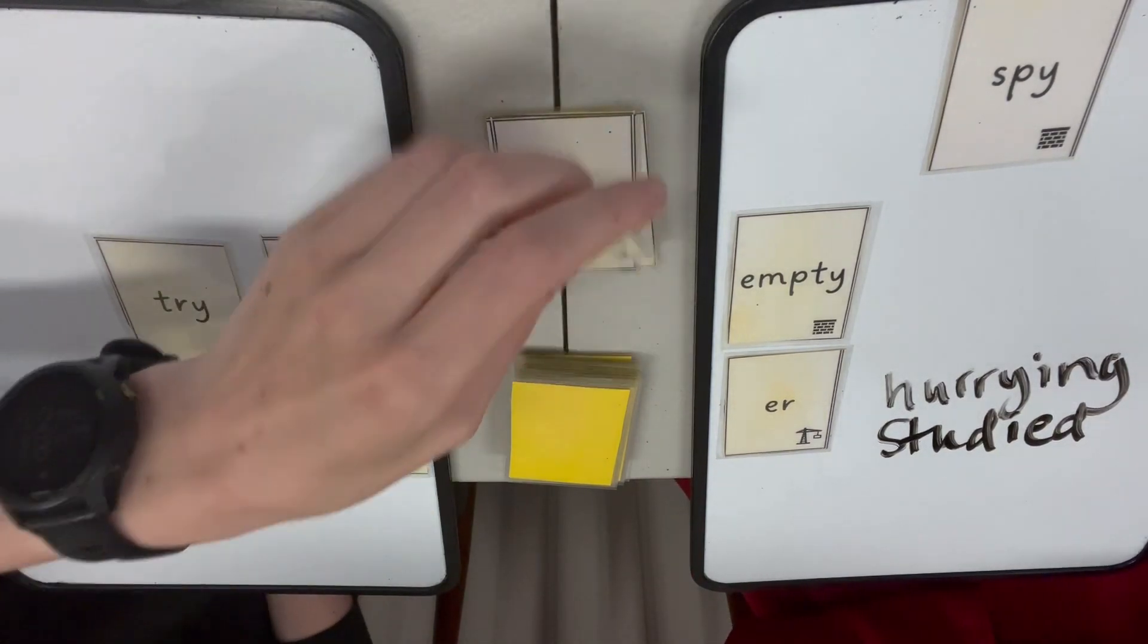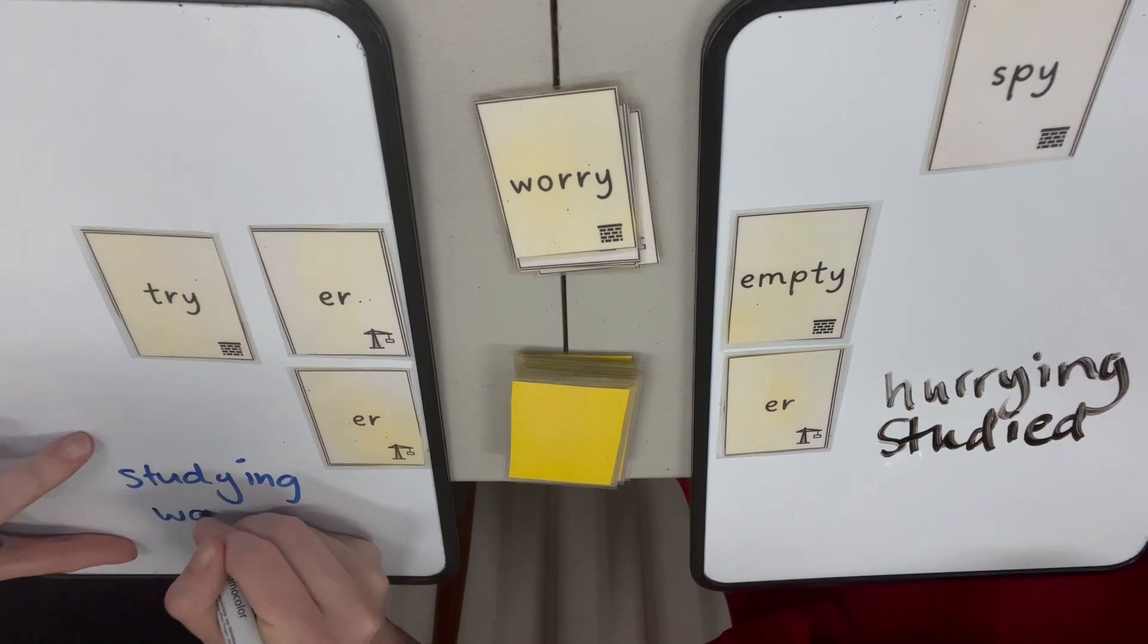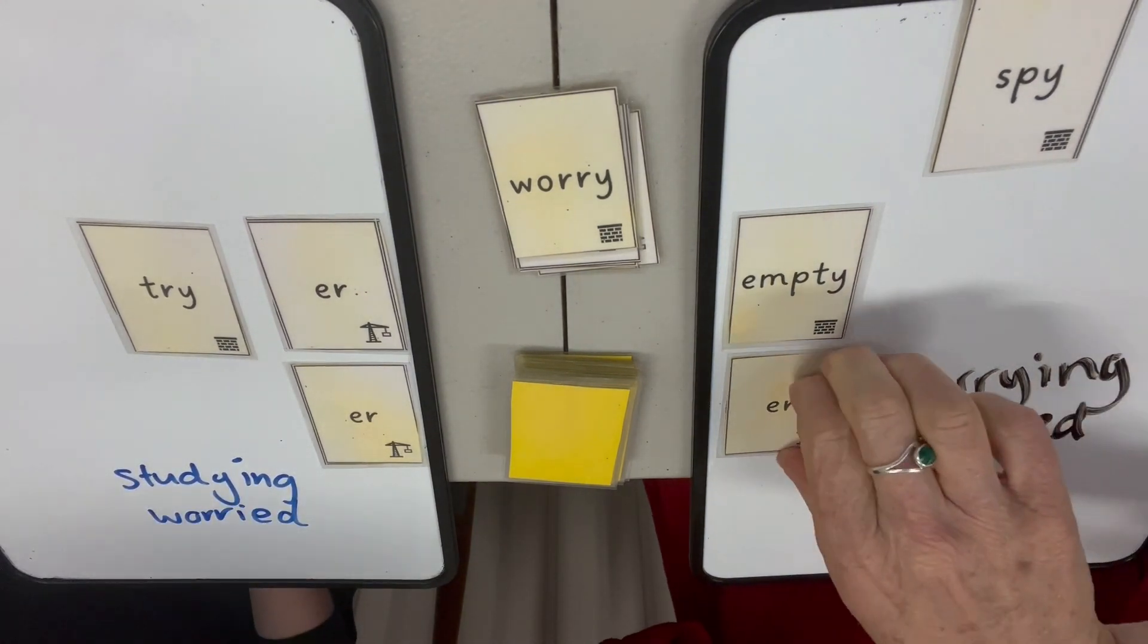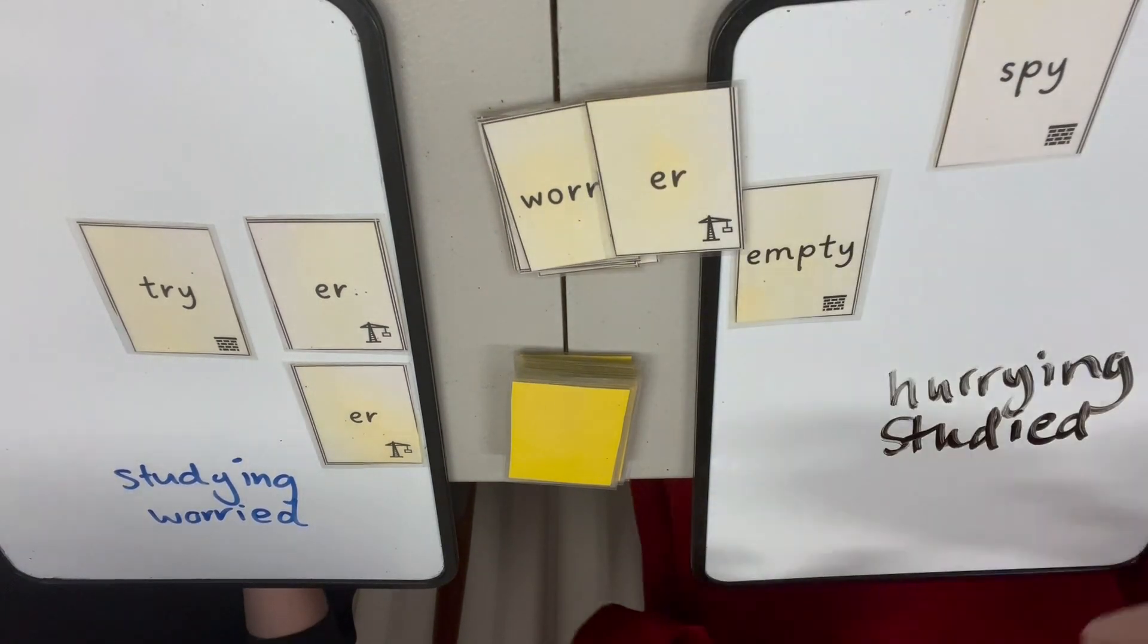Are you worried? I hope you're not worried about this game, Alison. Worried. Change that Y into an I. I'm always worried when I play with you. I'm a bit of a worrier in general. Worried.